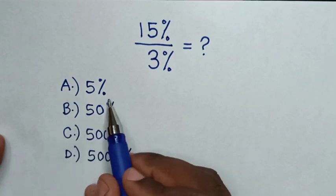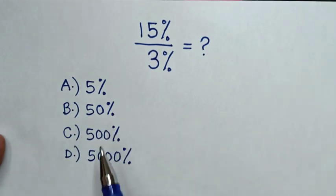Select between the answers: A, 5%, B, 50%, C, 500%, D, 5000%.